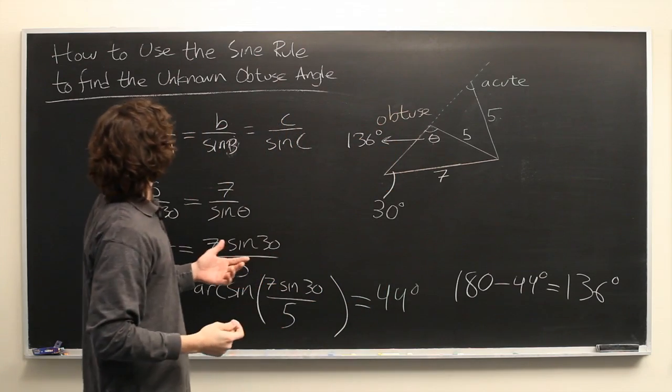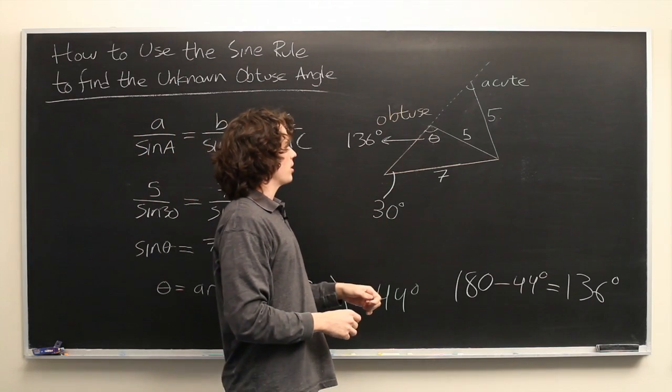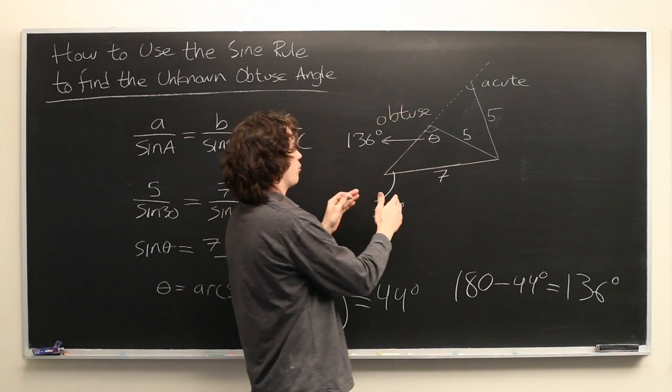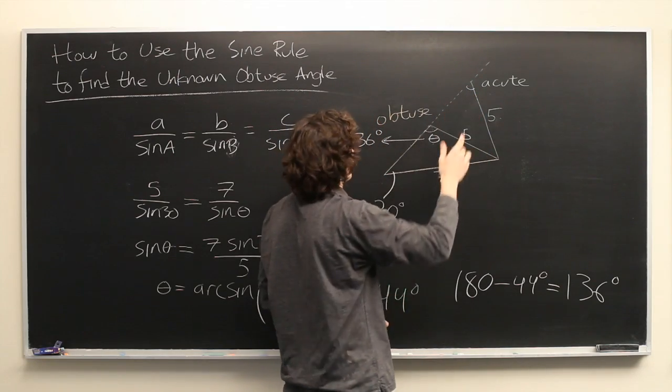In most situations, applying the sine rule, or the law of sines, will be completely unambiguous. But you need to be careful when you have angle, side, side, because that will leave some ambiguity in your answer.